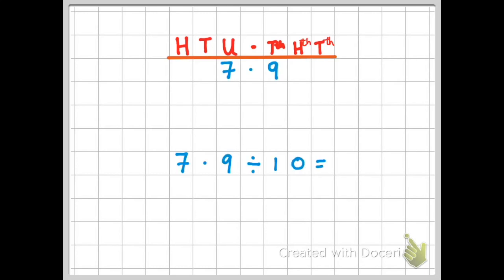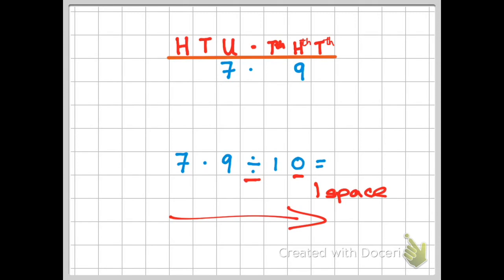My final example is 7.9 divided by 10. I'm dividing so numbers move to the right, and one zero means one space. The nine moves one space to the right. The seven skips over the decimal point like a hurdle into the tenths column. I now have digits in both the tenths and hundredths columns, so I cannot leave the units column empty — I must put a zero there. The answer is 0.79.